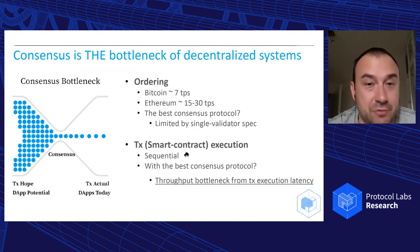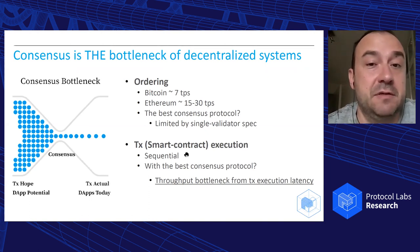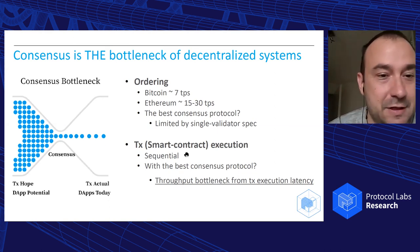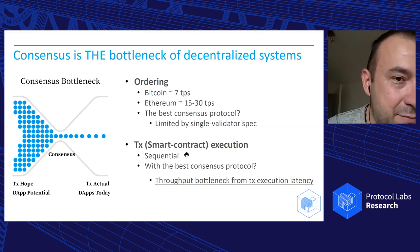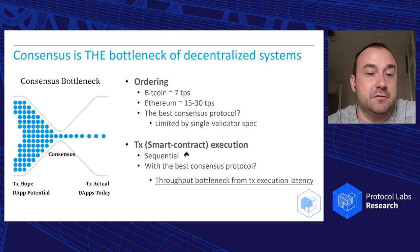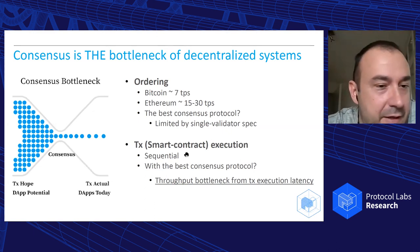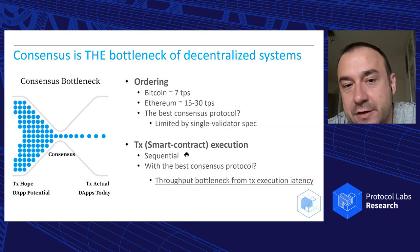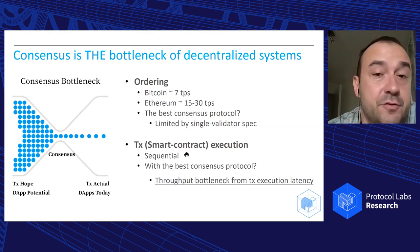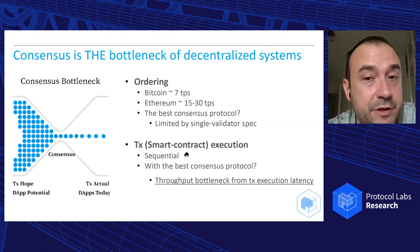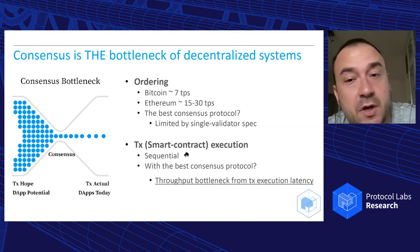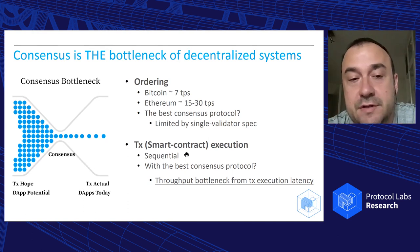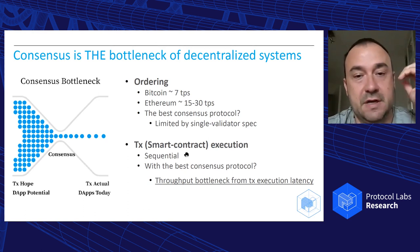More technically, if you look at decentralized systems today, consensus is the bottleneck. There are two things about consensus. Distributed application potential today is very high, but when you channel this through consensus protocols, classical ones are Bitcoin with 7 transactions per second and Ethereum with 15 to 30 transactions per second. These total-order services are most of the time bottlenecks in the system.